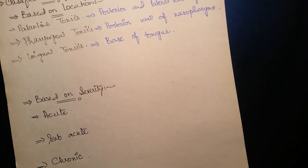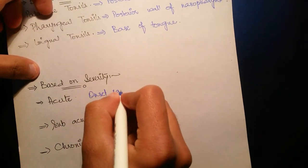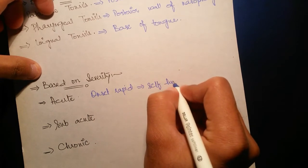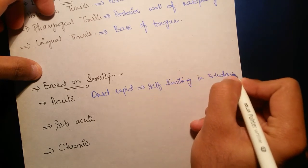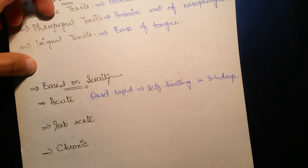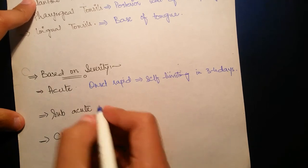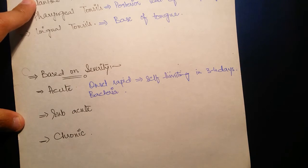Number one, acute: onset is rapid with self-limiting action in three to four days. Mostly the causative agents are bacteria like Streptococcus and Streptococci pyrogens. Virals are also involved like Epstein-Barr virus, and it limits itself in three to four days.